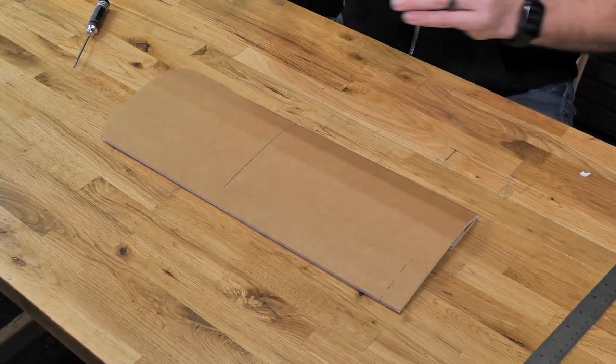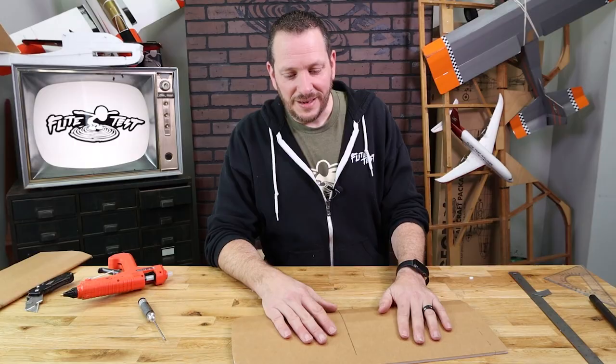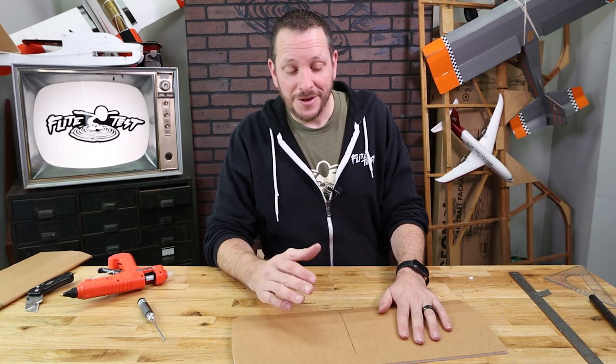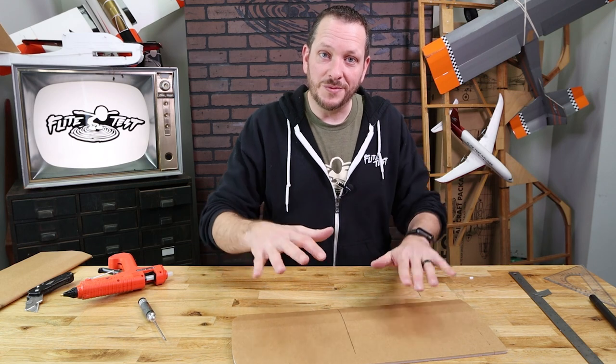After about a minute, you'll notice as we lift our hands, everything looks great. Now before we join the two wing halves, we're going to establish what we call dihedral, or in this case, because there's multiple points where the wing shapes up, polyhedral.